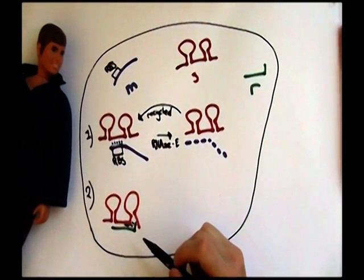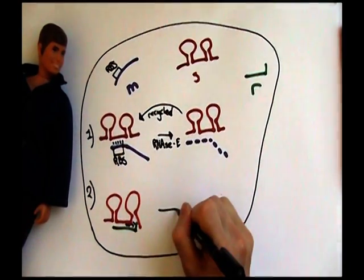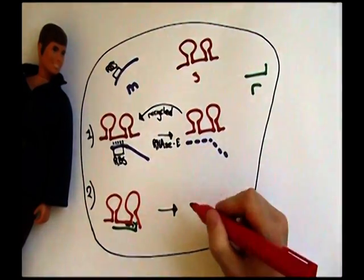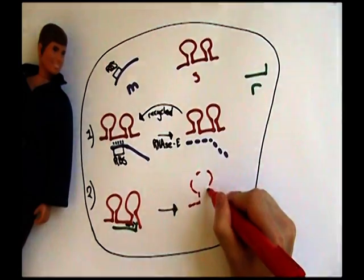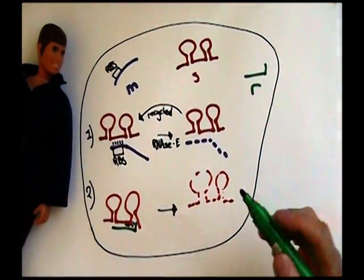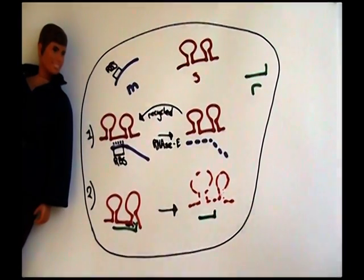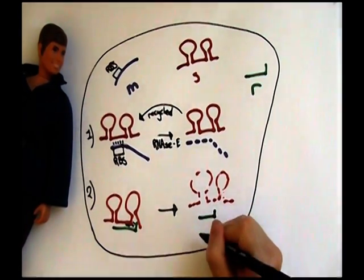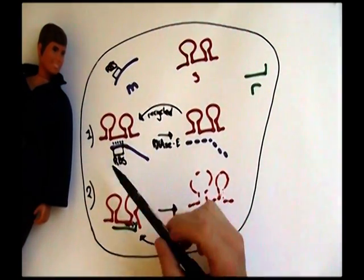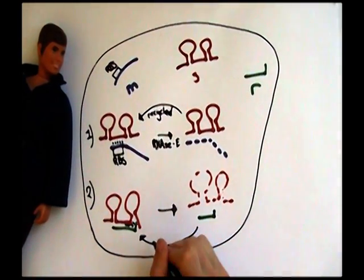This duplex leads to the specific degradation of the small RNA and conservation of the rRNA, and hence the rRNA is in a completely analogous way to the first reaction. The rRNA is recycled.